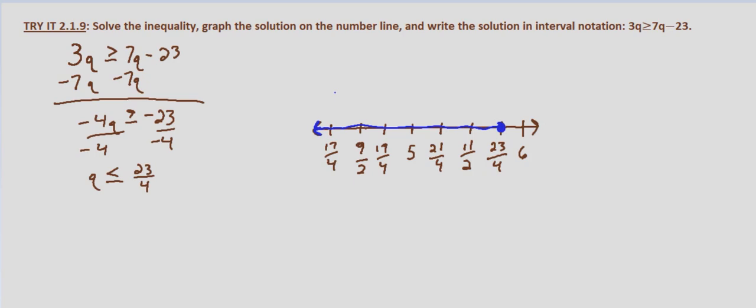And then in interval notation, since it's going left infinitely, we're going from negative infinity to 23 fourths. It does include 23 fourths because it's inclusive. So in interval notation it would be negative infinity 23 fourths with a bracket on the right hand side.